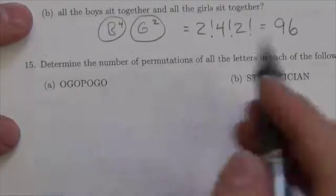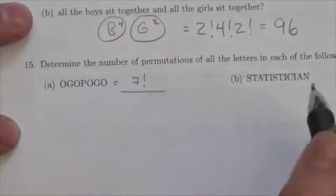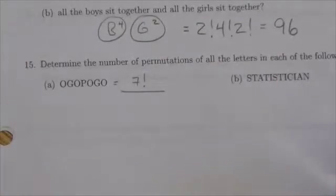Well, there's one, two, three, four, five, six, seven, seven letters in Ogopogo. So there's seven factorial ways we can arrange those letters, assuming that they were all different.